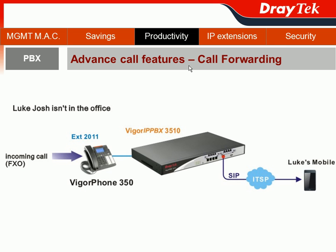Another feature is call forwarding. In another common scenario, Luke may not be at the office the following week because he is on a business trip, but he doesn't want to miss incoming calls, especially from customers. So he will ask the NIS or IT department to set up a rule: when there is an incoming call to Luke's extension 20112, the IPvX 3510 will forward the call through the SIP trunk directly to Luke's smartphone, which has a registered SIP number.